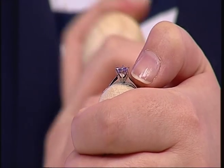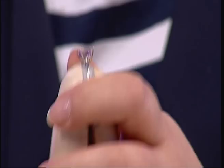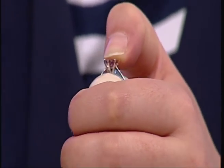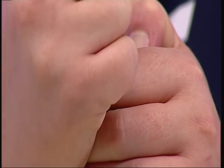The easiest way to do this instead of trying to do all the claws in order is to do opposite claws. So we're going to turn that round, thumb over the center stone and ease the pusher over.